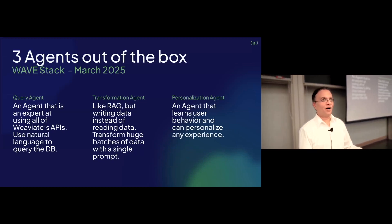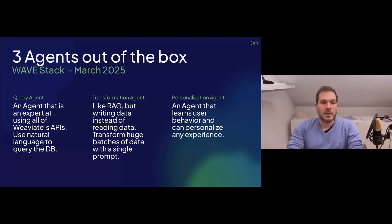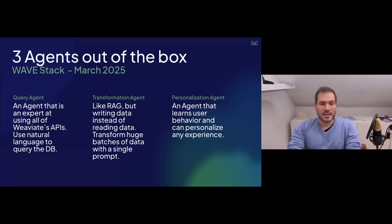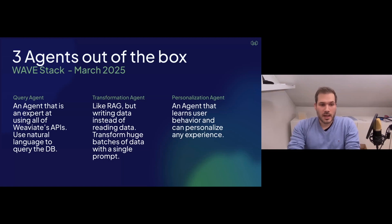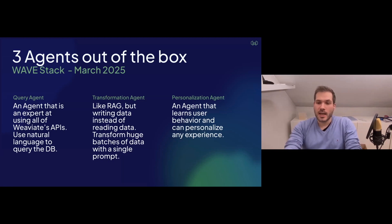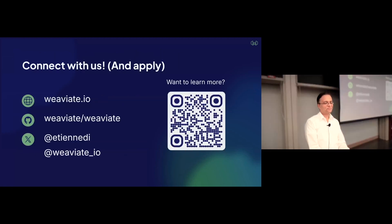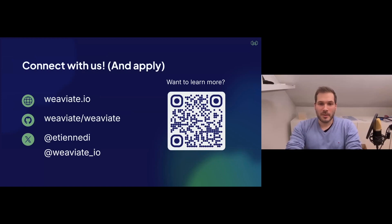We're just about out of time, but here are three out-of-the-box agents coming in March. We're calling this the WaveStack — the Weaviate agents and vector embedding stack. We're releasing three types: the query agent, which is an expert on Weaviate's API so you can use natural language to query the database; the transformation agent, which is like RAG but writing data — with a single prompt you could translate your entire database to Spanish and write it back; and the personalization agent, which uses learning from user behavior to customize results. Here are some links if you want to find out more, and I'm happy to answer questions.